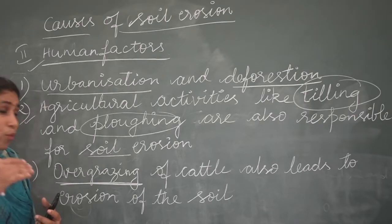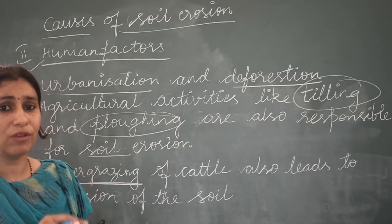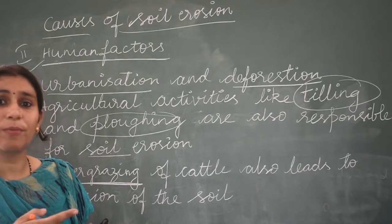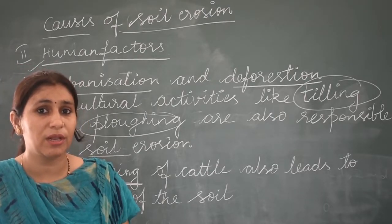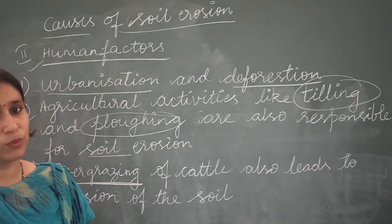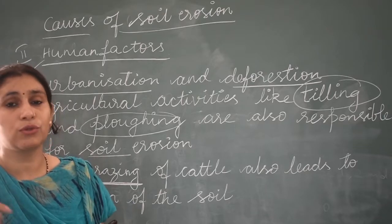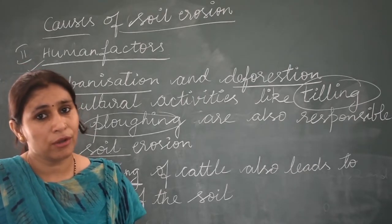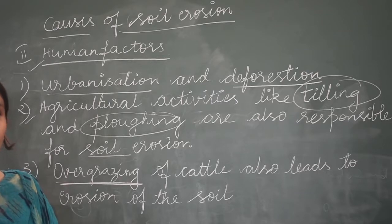So what will happen with overgrazing? The area will become free of plants — there will not be plants there. Because all plants have been eaten by herbivore animals, the soil becomes exposed. Then due to natural factors such as wind or rain, the soil gets eroded. It will be erosion in the soil.